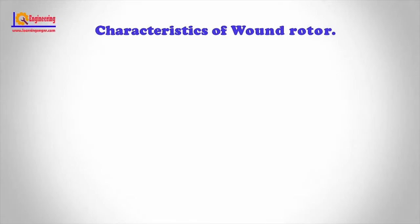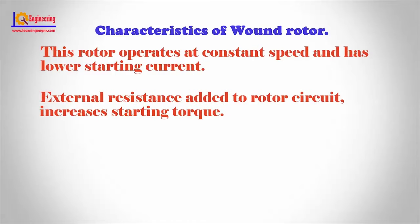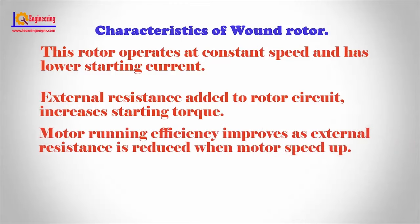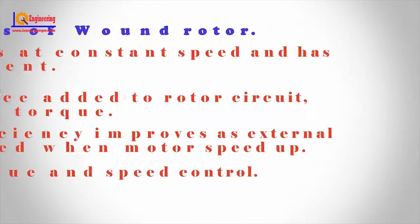Characteristics of wound rotor: This rotor operates at constant speed and has lower starting current. External resistance added to the rotor circuit increases starting torque. Motor running efficiency improves as external resistance is reduced when the motor speeds up. It provides higher torque and speed control.